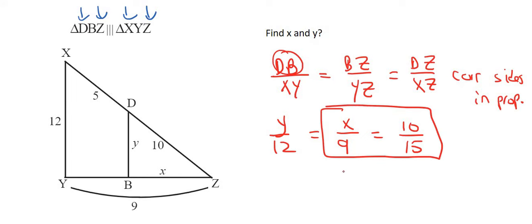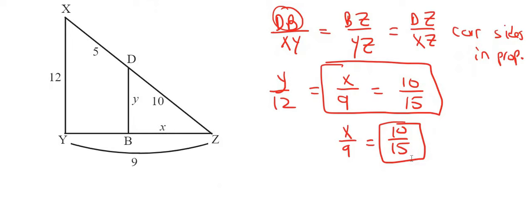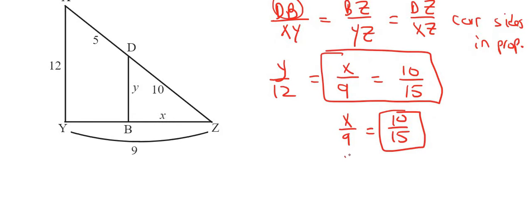Okay, so that'll be X over 9 equals to 10 over 15. I would type this on my calculator so it would simplify. So it would be X over 9 is now equal to 2 over 3. I would now look at the ratio, so to go from there to there you multiply by 3, and so we do the same there, and so X is 6.